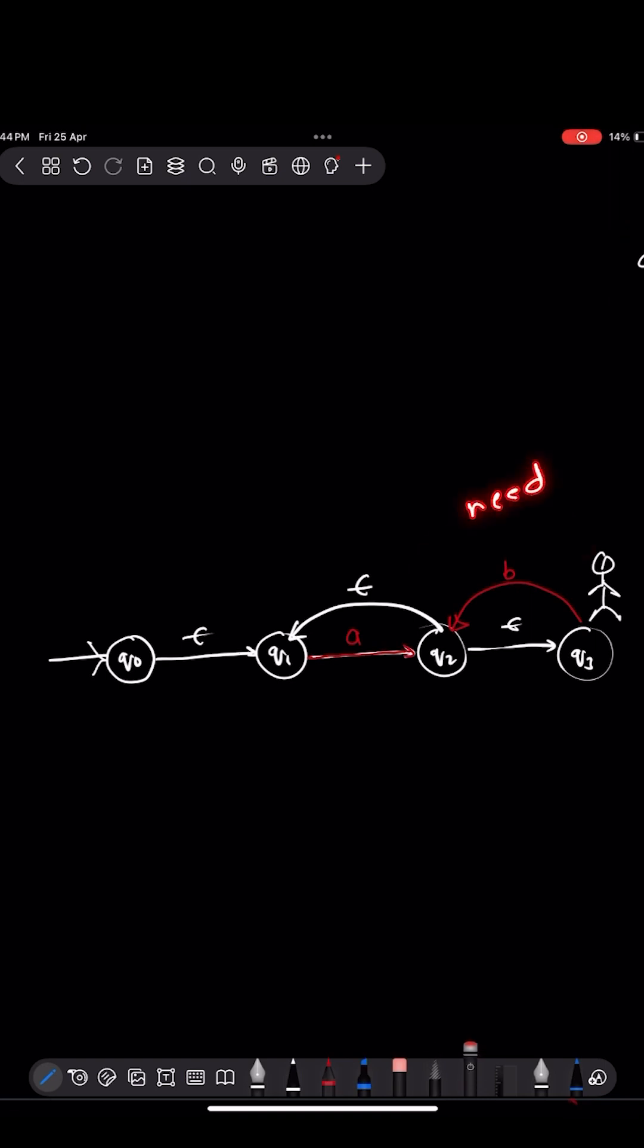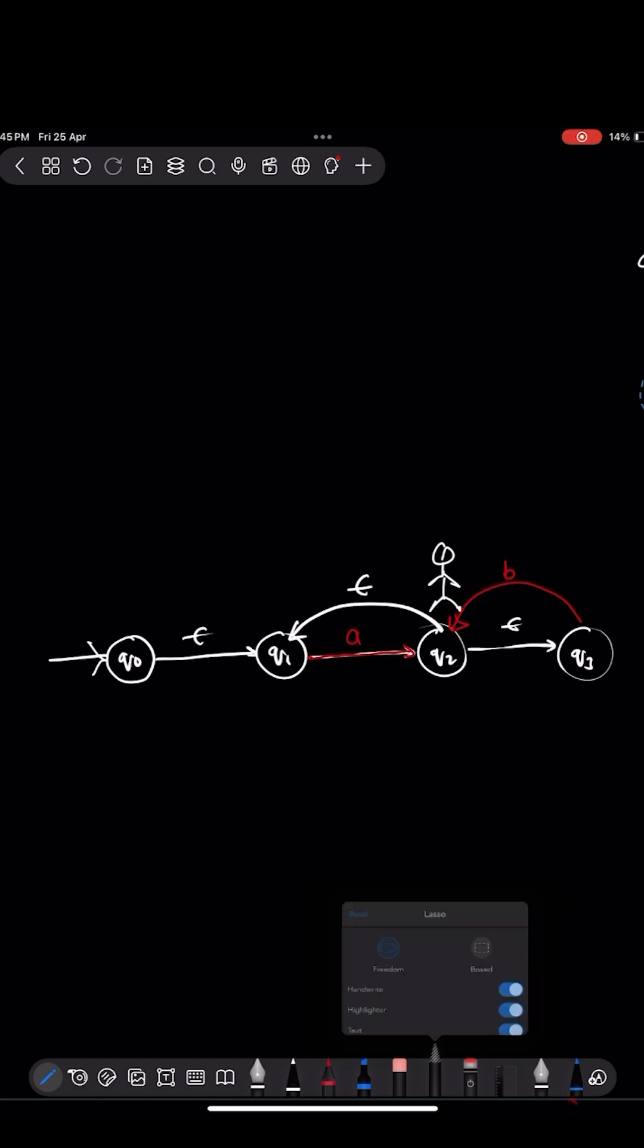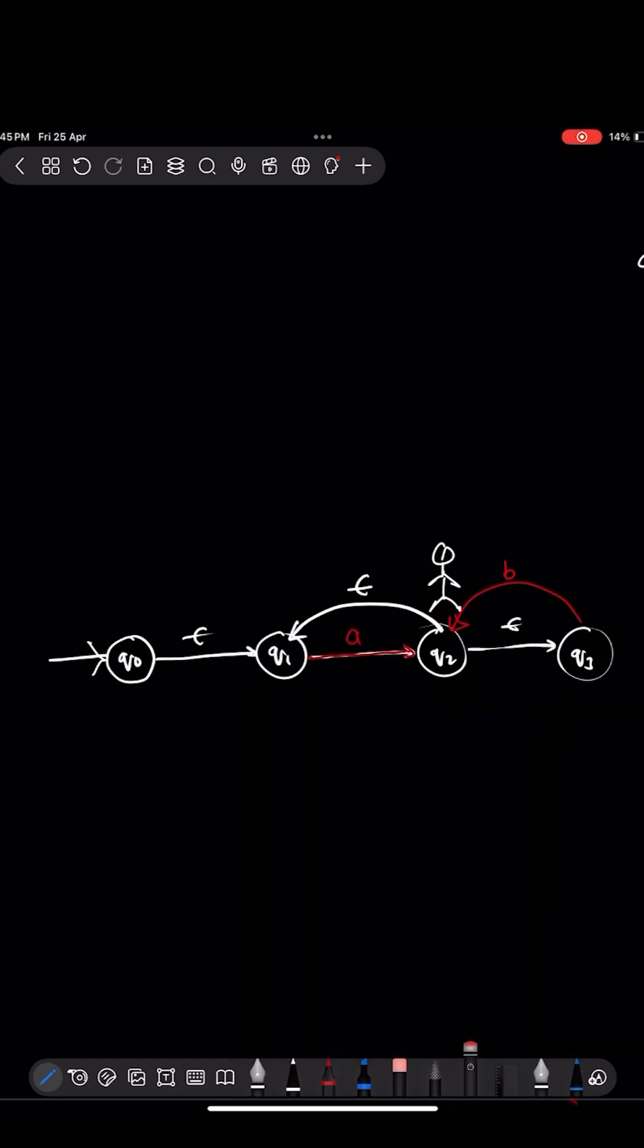Similarly, to move from q3 back to q2, I will need an input B. After receiving B, I can move from state q3 to q2. And now I have two options: I can move either to q3 or q1 as I have Epsilon in both directions.